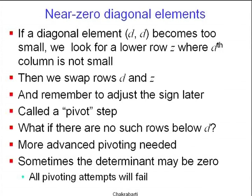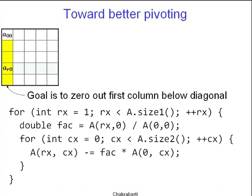More advanced pivoting methods exist, and sometimes the determinant may be zero, which means all pivoting attempts, no matter how sophisticated, will fail. The standard algorithm that is usually taught is slightly different because it has slightly better pivoting properties, where we start with the first row A[0,0] onwards. Our goal is to zero out the first column, and we proceed column by column.